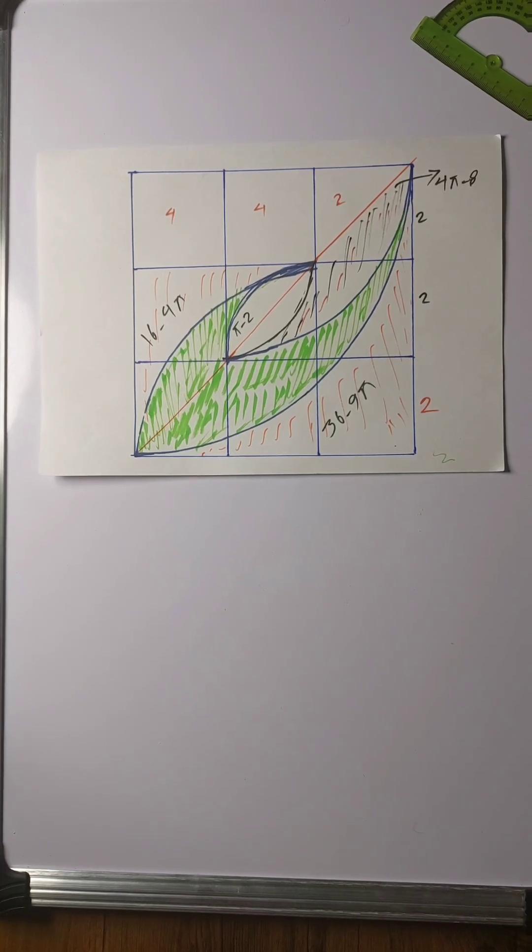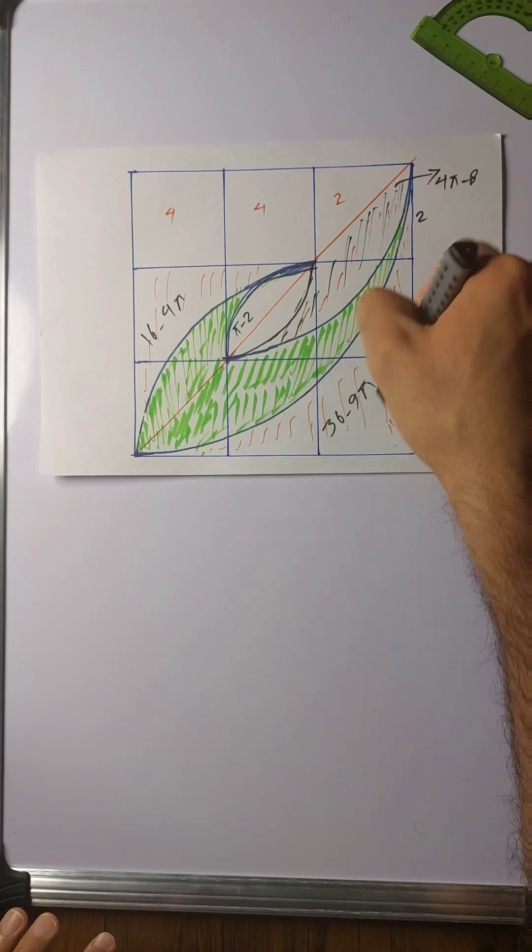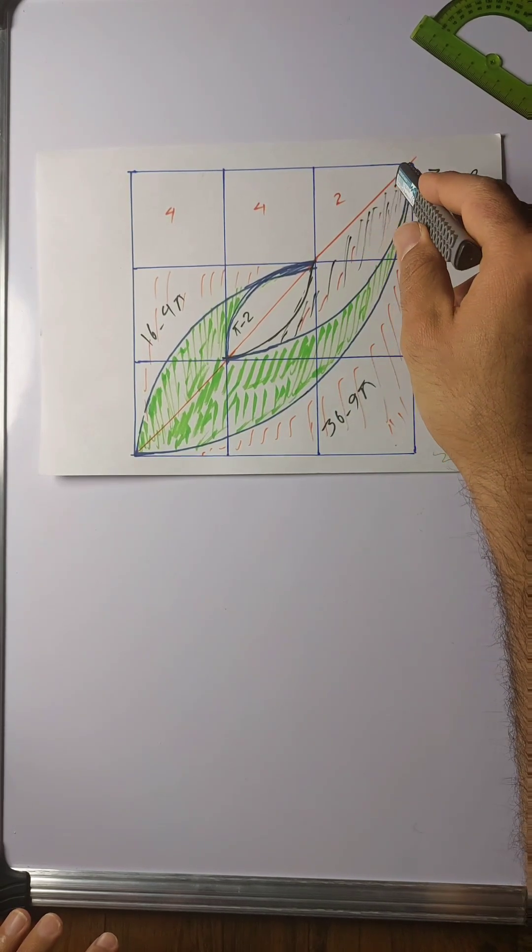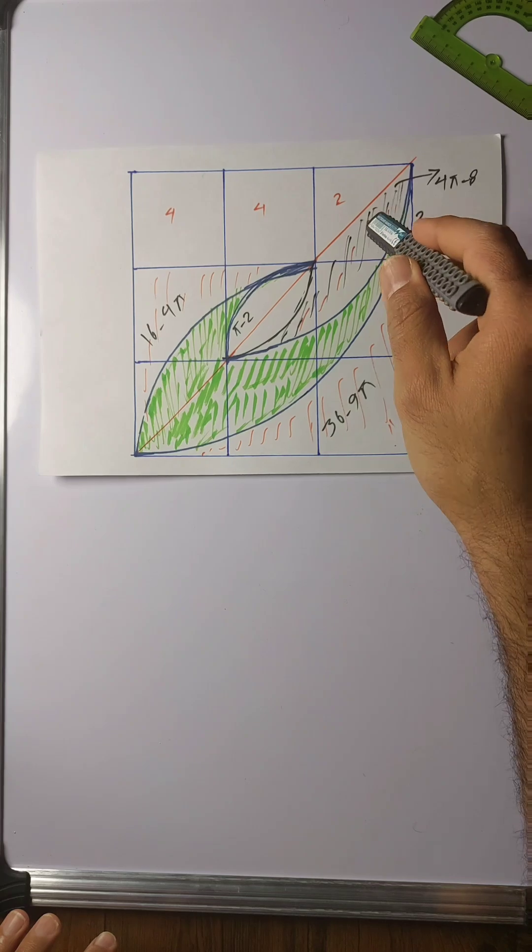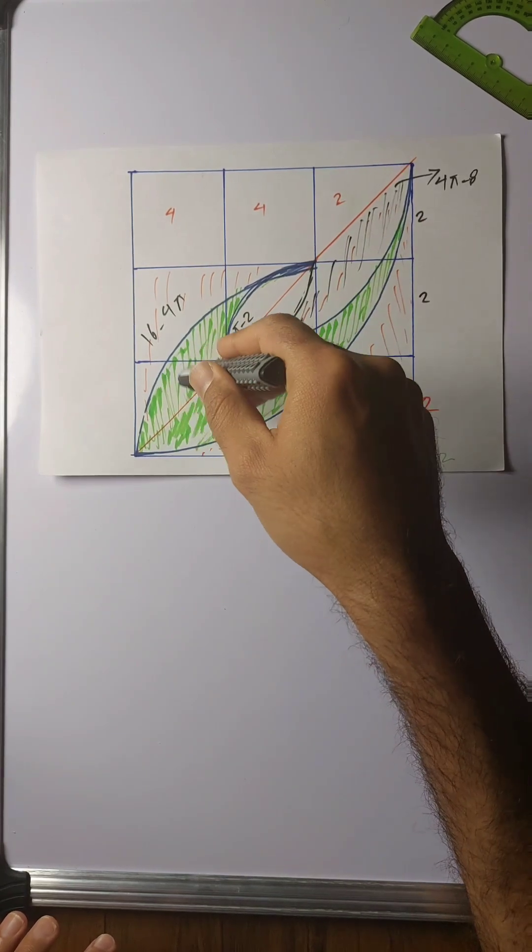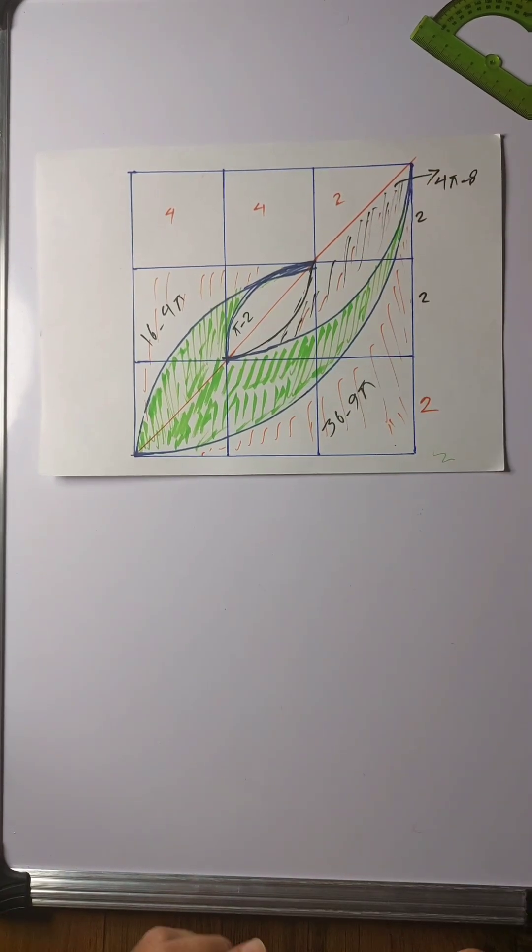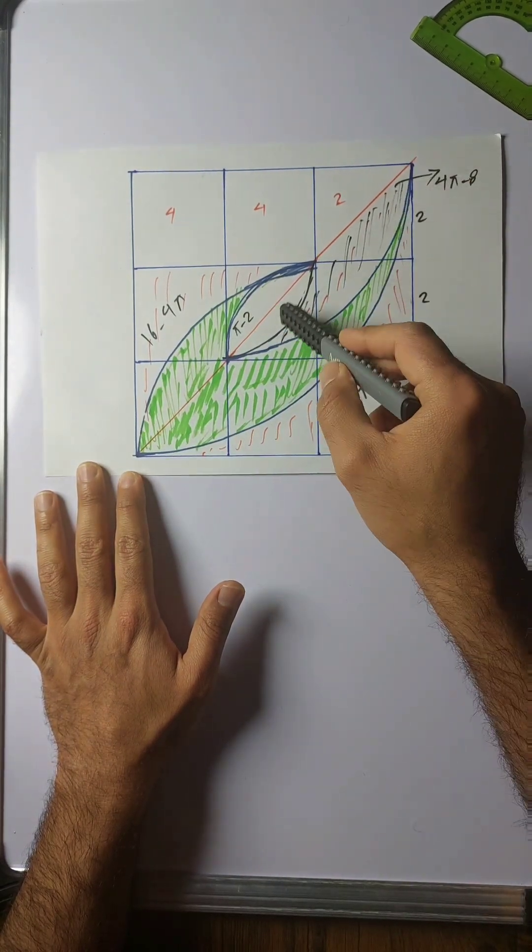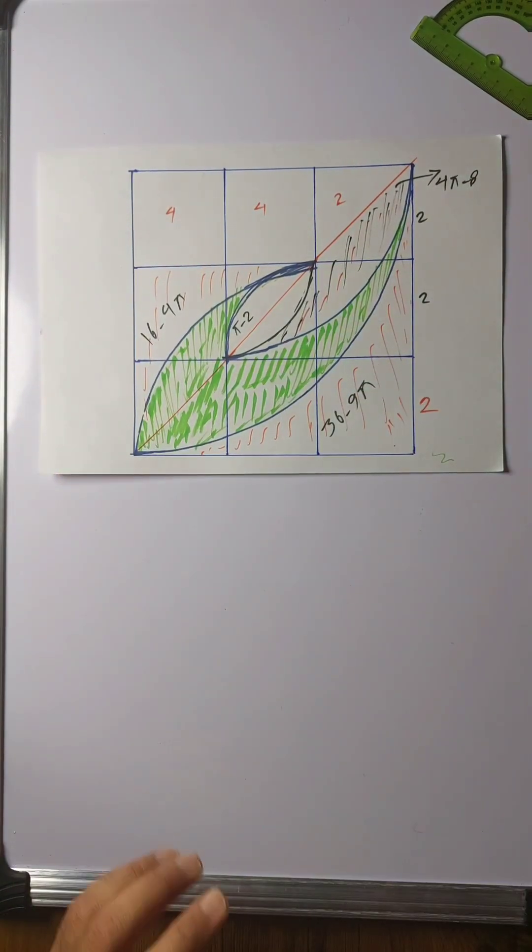We have a bigger square here with a side of 6. It is comprised of nine little squares with a side of 2, and we have this green bounded area which is bounded by four quarter circles—this quarter circle, this one, this one, and this one. What we're going to find is the area of this green area.